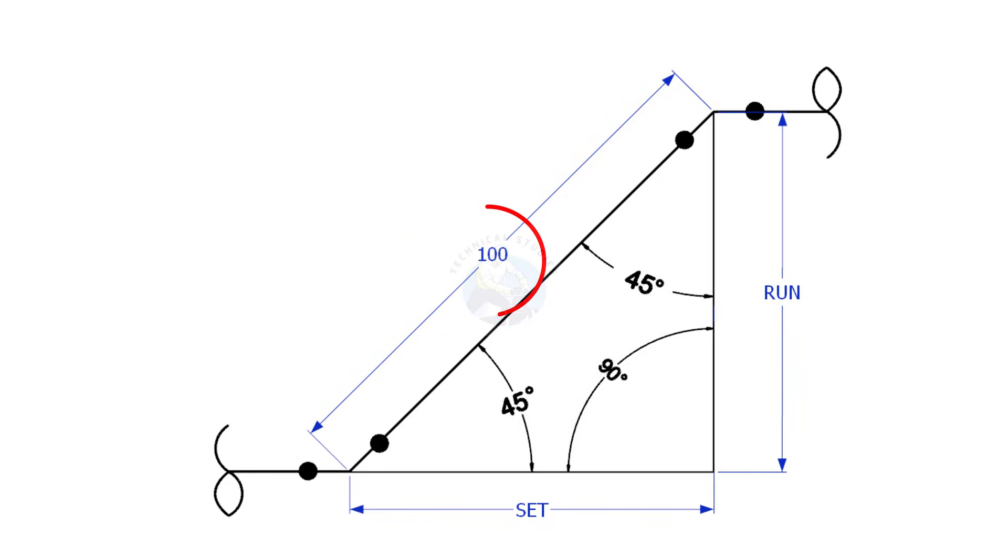Suppose the travel length is 100. How to calculate the set and the run? The travel length is given and the angle is 45. The formula to calculate the set or run is divide the travel length by 1.414.